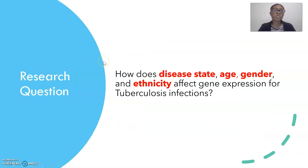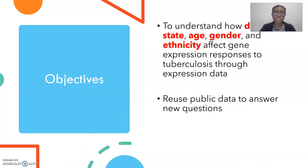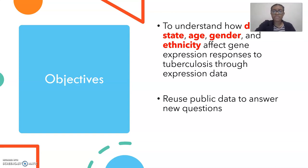My research question was: how does disease state, age, gender, and ethnicity affect gene expression for tuberculosis infections? To answer my research question, my objectives were to understand how disease state, age, gender, and ethnicity affect gene expression responses to tuberculosis through expression data, and to reuse public data to answer new questions.